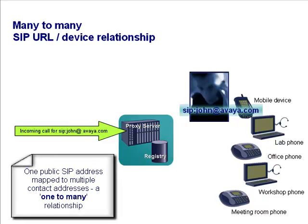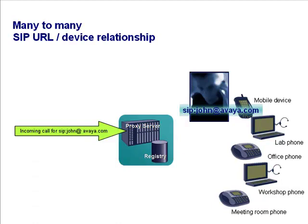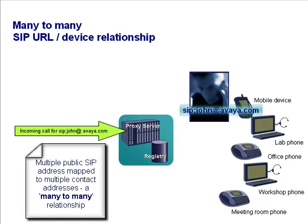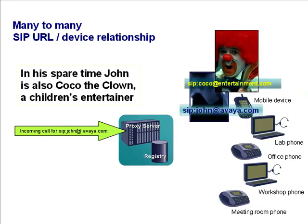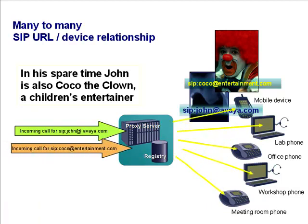So we've seen how one public address can be mapped to multiple contact addresses — a one-to-many relationship. There's nothing to stop us going one step further and having multiple public addresses mapped to multiple contact addresses — a many-to-many relationship. It might be that John has another occupation in his spare time. So long as the service provider allows it and the necessary DNS registrations have taken place, there's nothing to stop an INVITE to a second public address being sent to the same proxy and proxied to the same registered endpoints. User mobility and forking — two inherent services of SIP.